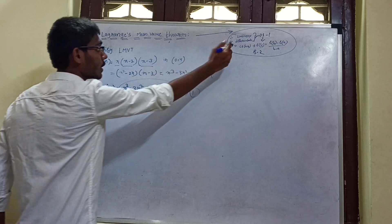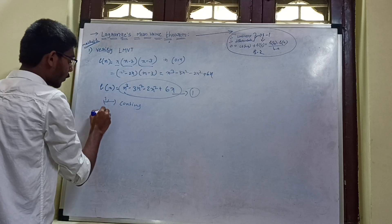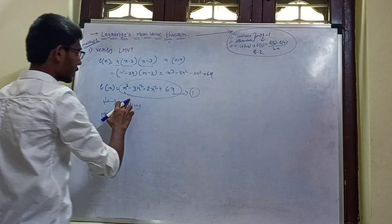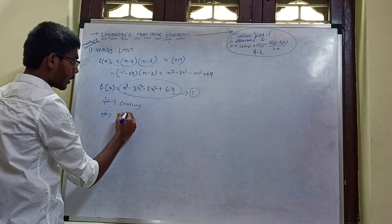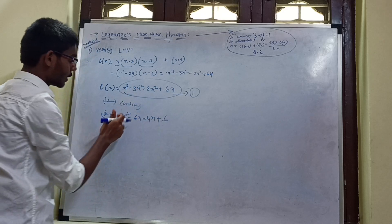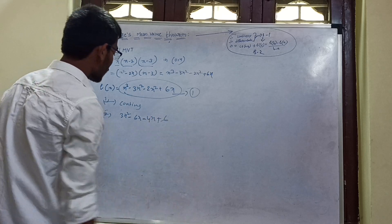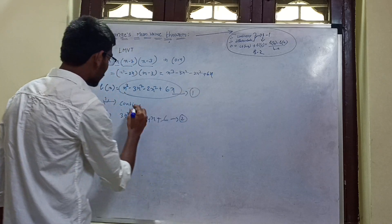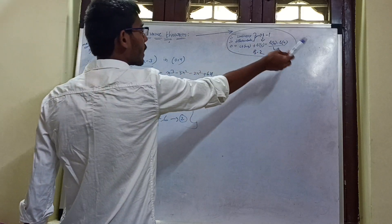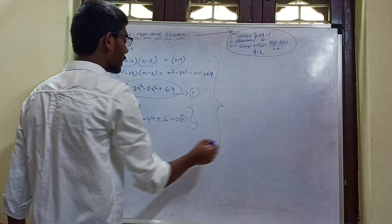Differentiating equation 1 with respect to x: f'(x) = 3x² - 6x - 4x + 6 = 3x² - 10x + 6. This is equation 2. Both conditions are satisfied, so we can go to step 2 and apply f'(c) = [f(b) - f(a)] / (b - a).